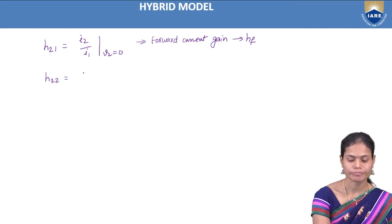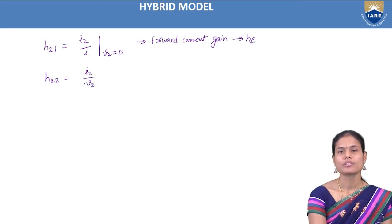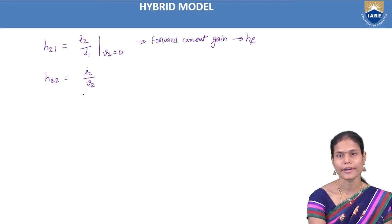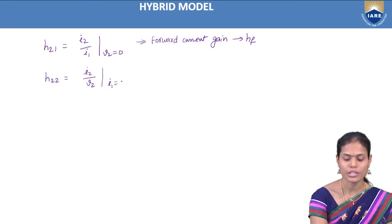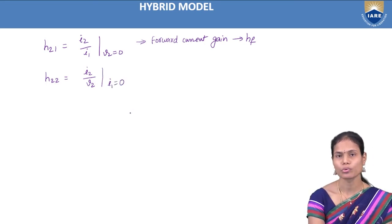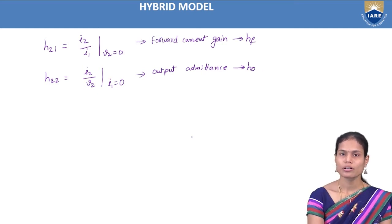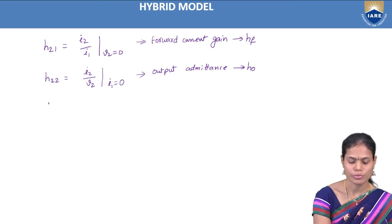The last parameter is H22, which is I2/V2 when input is open-circuited. Since V/I gives resistance but here we have I/V, this indicates admittance (1/resistance). This is called the output admittance, abbreviated HO. So the four H parameters are: HI (H11), HR (H12), HF (H21), and HO (H22).